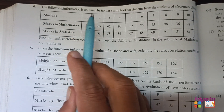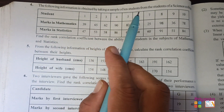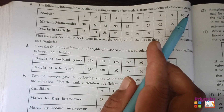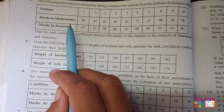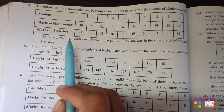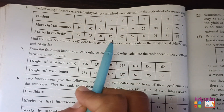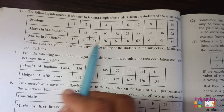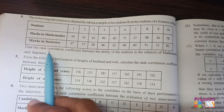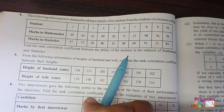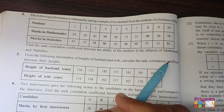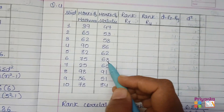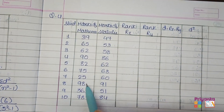Question 4: The following information is obtained by taking a sample of 10 students from the science college. The number of students are given marks in mathematics and marks in statistics. No ranks are given, so we will derive them. We need to find the rank correlation coefficient between the ability of students in mathematics and statistics. Let's take this information into a table and assign ranks.